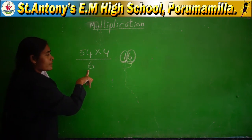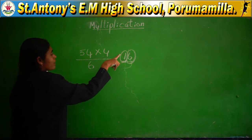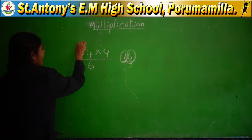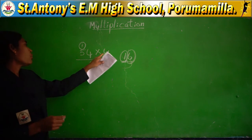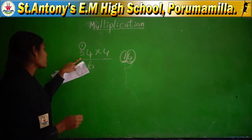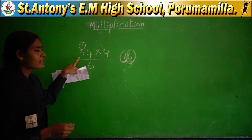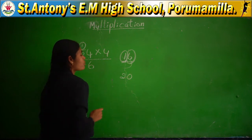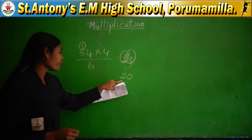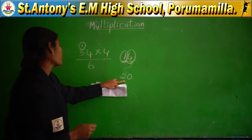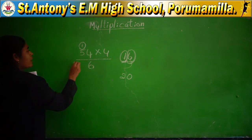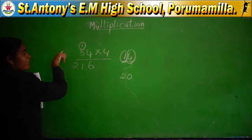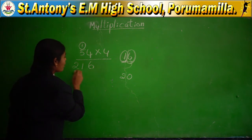You write the 1's place digit in the answer line, and keep the remaining digit as a carry. Next, 4 fives are 20, plus the carry 1 equals 21. Because there is no other digit left to carry forward, you can directly write 21 here. So the full product is 216. 216 is the product, 54 is the multiplicand, and 4 is the multiplier.